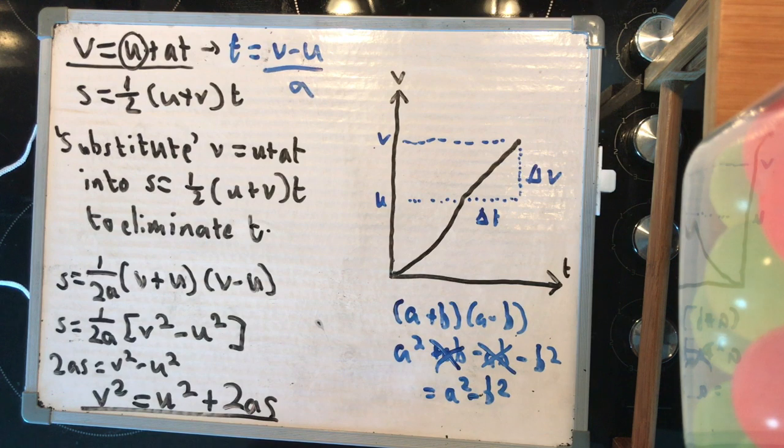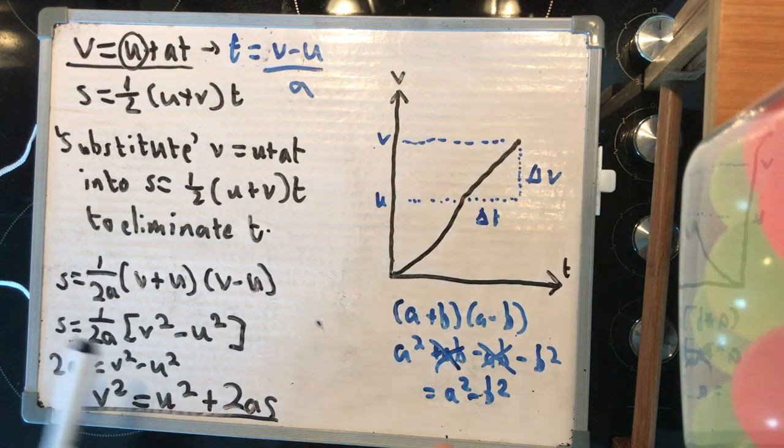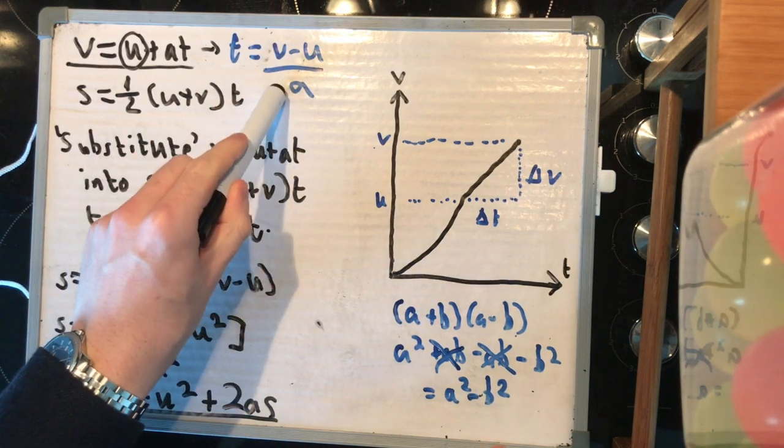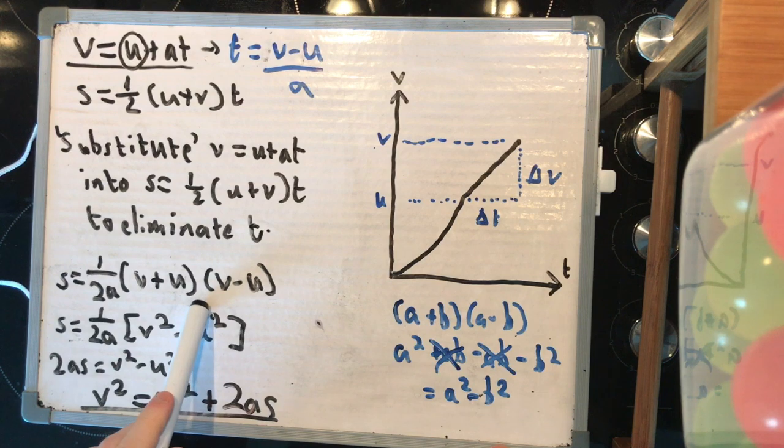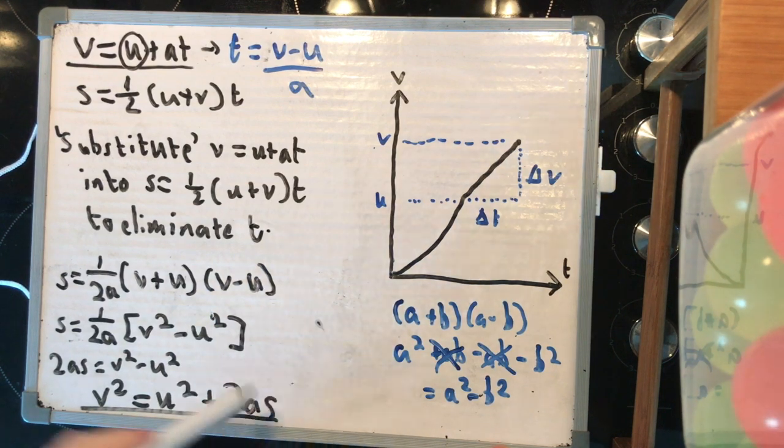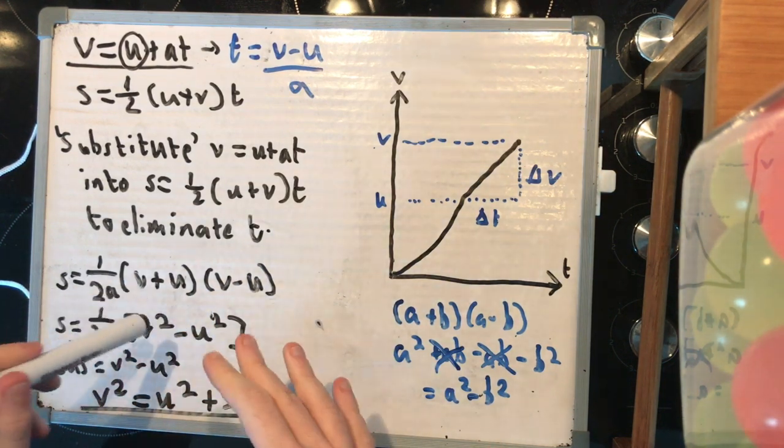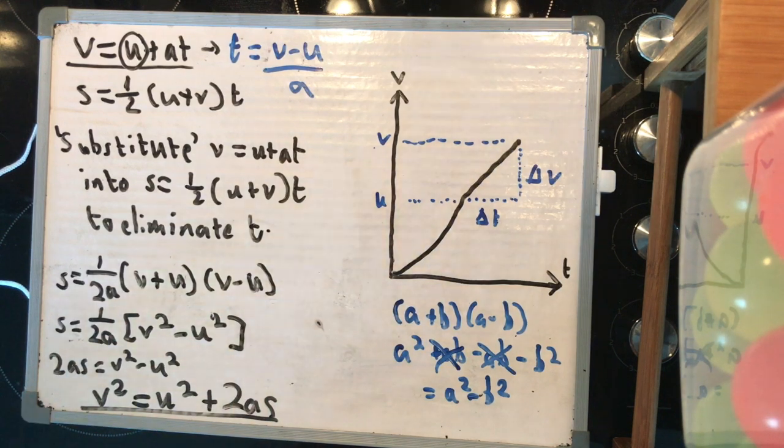That one is the messiest. It's got the most mathematical nonsense going on, because that's an awkward rearrange compared to the others. And that, whilst you can do it in long form like this, is a bit more complicated to sort out. But it drops out with v squared equals u squared plus 2as. And that is the four SUVAT equations that you need to know derived.